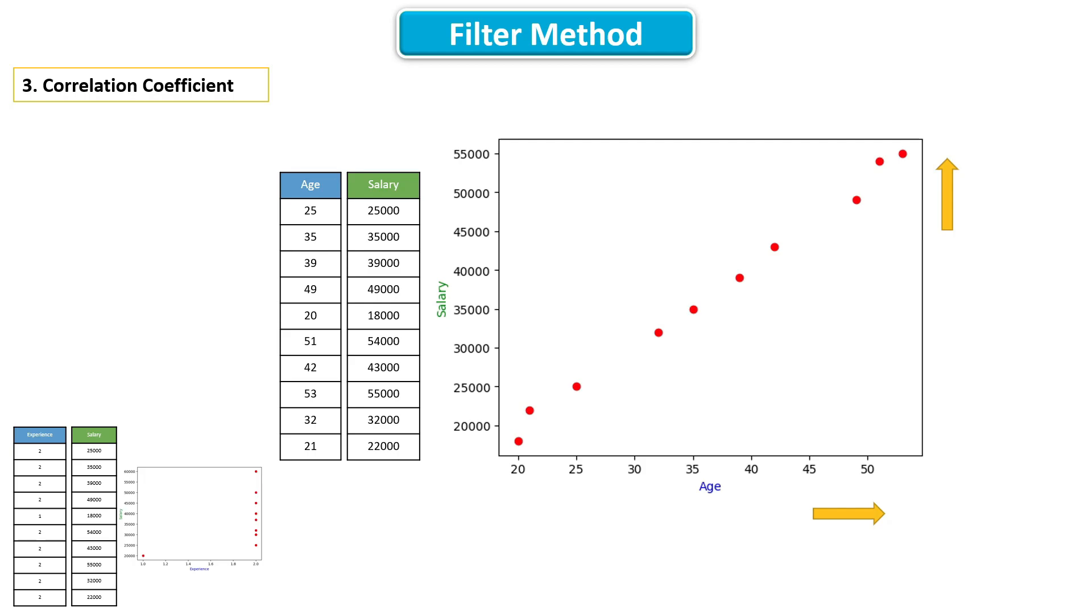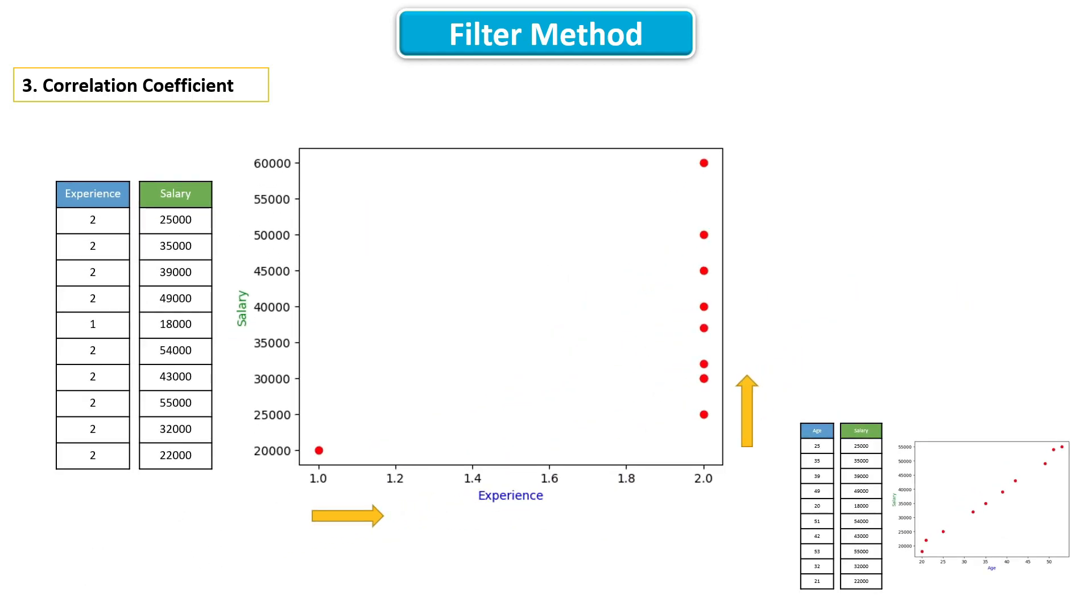Correlation helps us to understand how two variables vary together or how two variables are moving together. In this case, age and salary are moving in the same direction, which indicates that they are positively correlated. So age is an important feature. But if the correlation is less, then that feature is not useful.